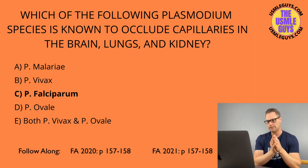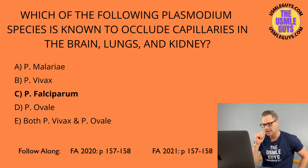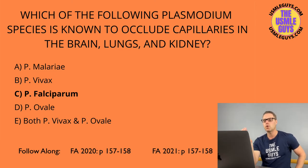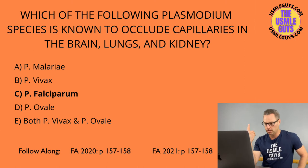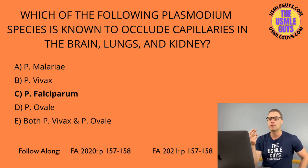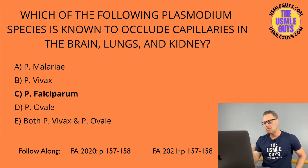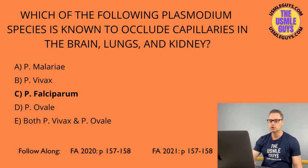Finally, the sexually transmitted protozoa you need to know — super high yield — is Trichomonas vaginalis. This causes a greenish, foul-smelling discharge, along with burning and itching in the vaginal area. Transmitted sexually; diagnosis is confirmed by clinical features, physical exam showing a strawberry cervix, and identification of motile trophozoites on wet mount. We treat this with metronidazole, and keep in mind you also need to treat the partner.